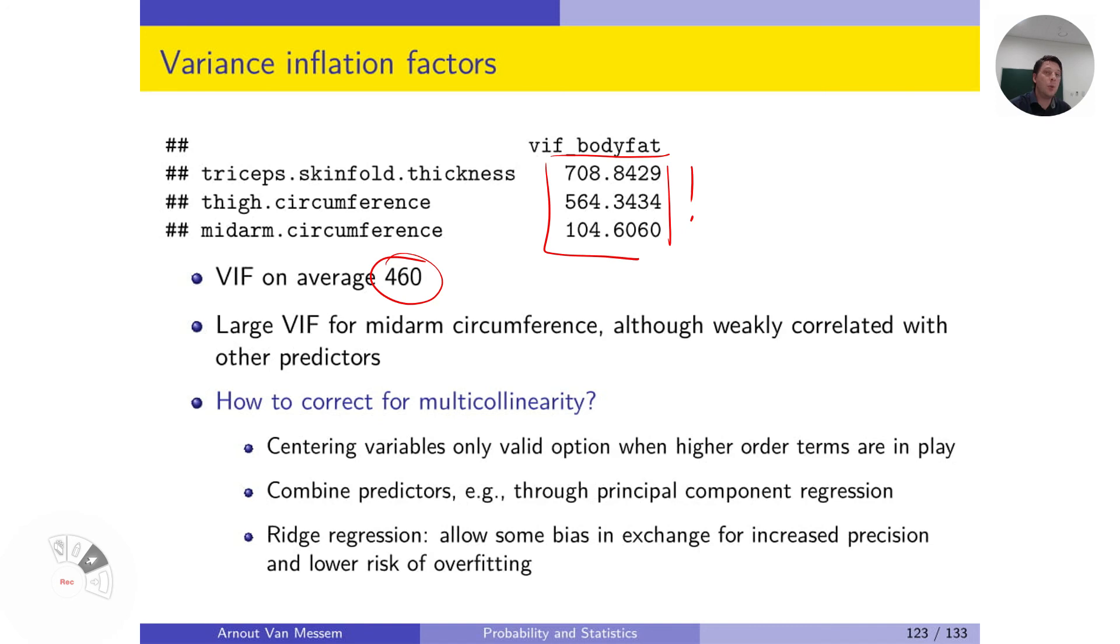And the problem is, how can we correct it? Because they are, I said before, because they are not higher order terms, we cannot use the centering option because it won't help at all. What we can do is we can combine predictors, we can combine them through, for example, principal component regression or other combination methods.